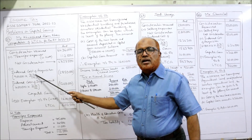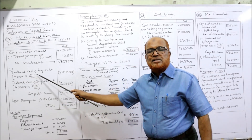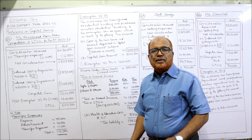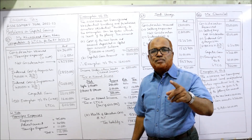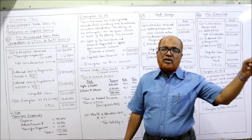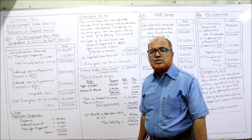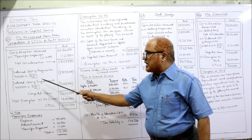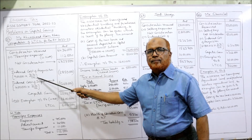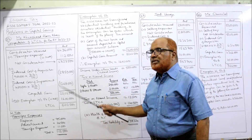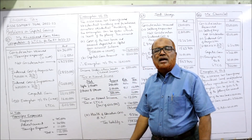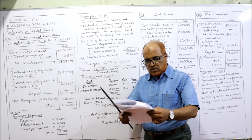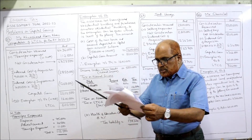So: Rs. 9 lakh (stamp duty value) × CII of current previous year 317 ÷ 100 (for assets purchased before 1/4/2001, the index number is taken as 100) = Rs. 28,53,000 as the indexed cost of acquisition.